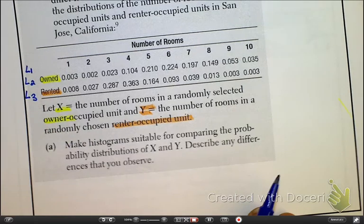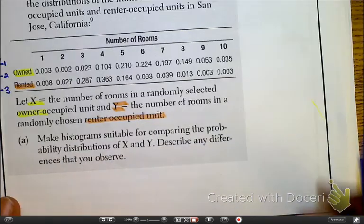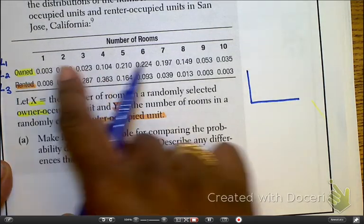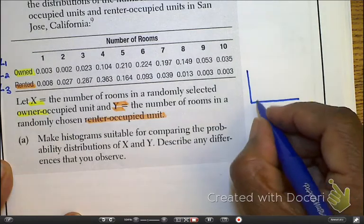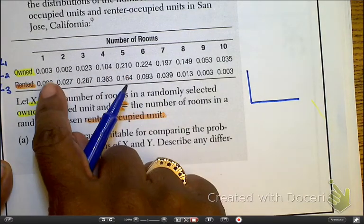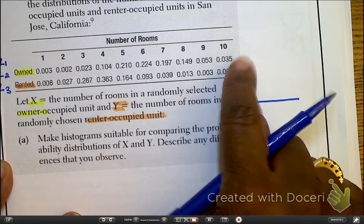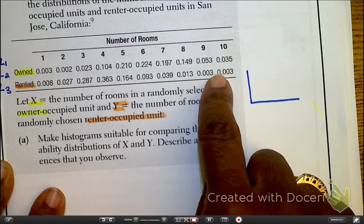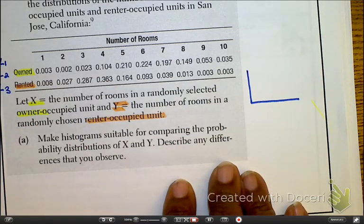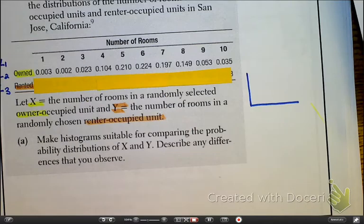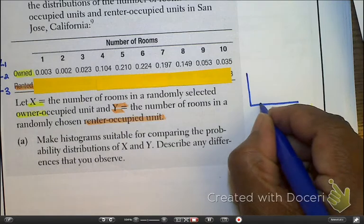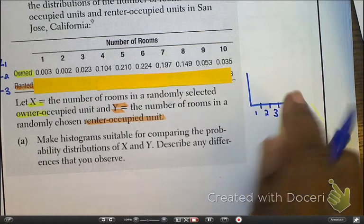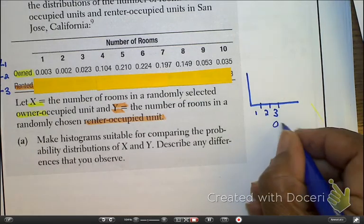So I'm going to do the histogram first, and I'm just going to set it up, and then I'll show you the pretty one. So remember, we have 0, we have 1, 2, 3, 4, 5, 6, 7, 8, 9, 10, and then we have our probabilities that go from 0.003 to 0.035. So I'm literally going to ignore this last where it says rented. And this is owned.